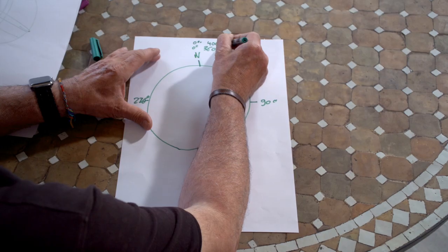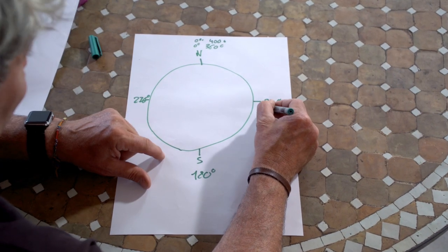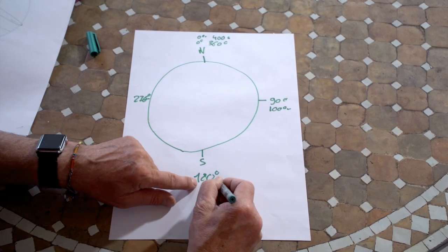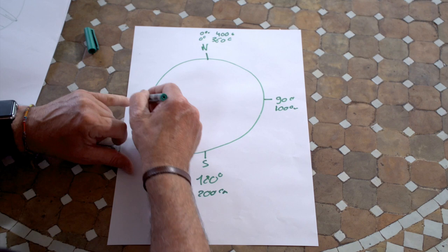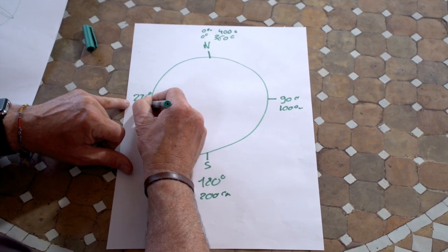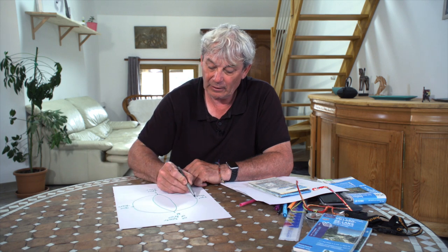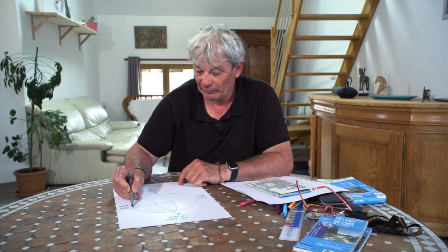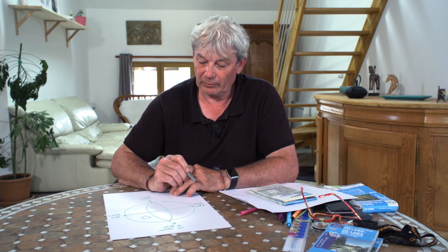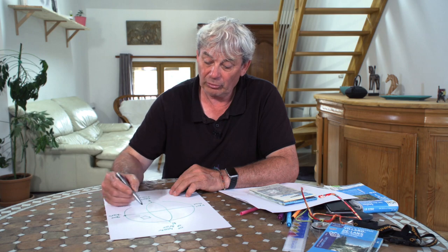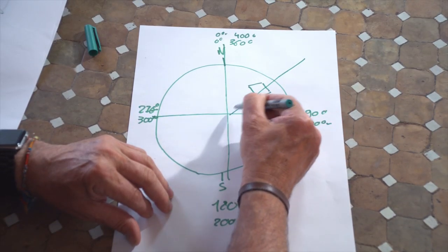On a donc 0 grade ici, et on a 400 grades. Ce qui fait qu'au lieu d'avoir 90 degrés, on a 100 grades. Au lieu d'avoir 180 degrés, on a 200 grades. Et au lieu d'avoir 270, on a tout simplement 300. L'axe Nord-Sud est toujours représenté par le méridien d'origine, qui est le méridien de Greenwich, et l'Équateur, qui est le parallèle d'origine. Nous, Français, on est à peu près ici, à la latitude à peu près 45 degrés, ce qui correspond environ à Montélimar.